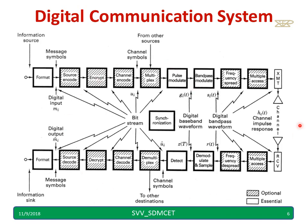This is a complete block diagram — we have taken only the blocks that are basically needed and discussed them. You can also have encryption: after the source encoder produces zeros and ones, before giving to the channel encoder you can do encryption, and at the receiver side you can do decryption. There are many additional blocks you can add, such as frequency spreading and multiple access, etc.